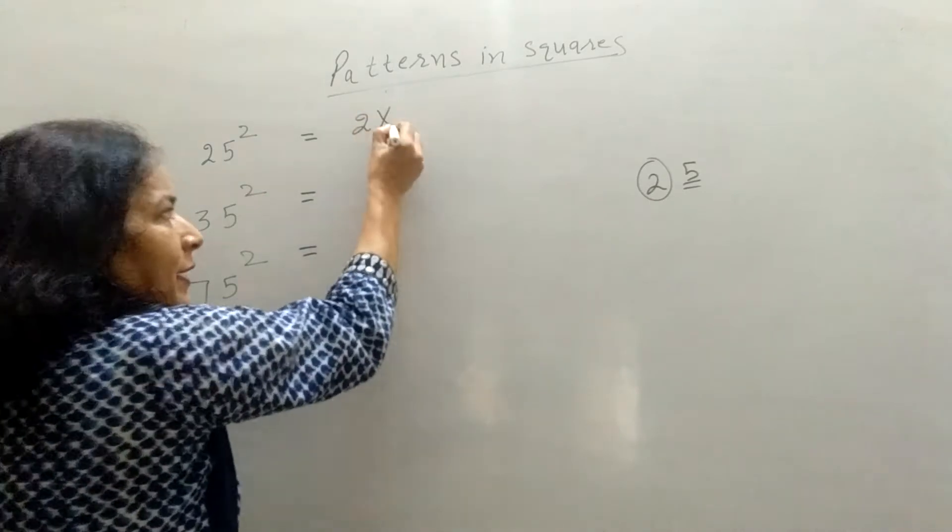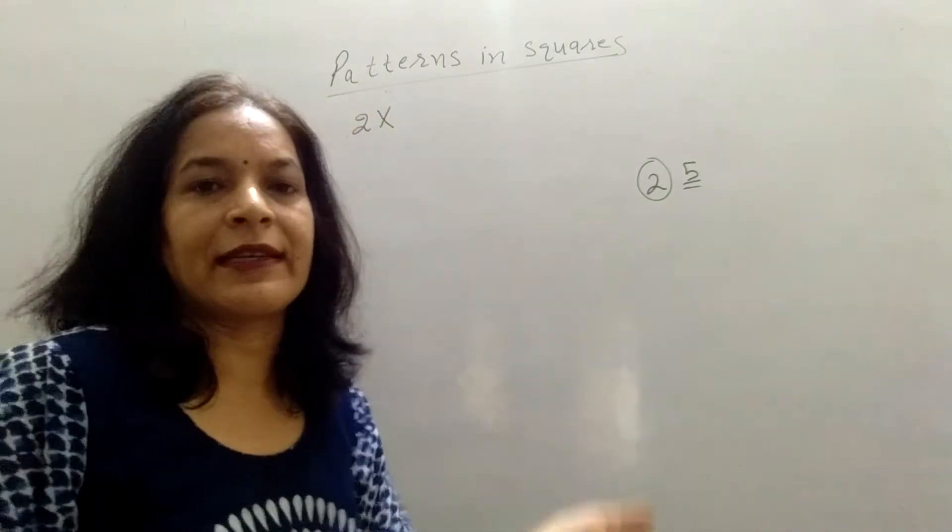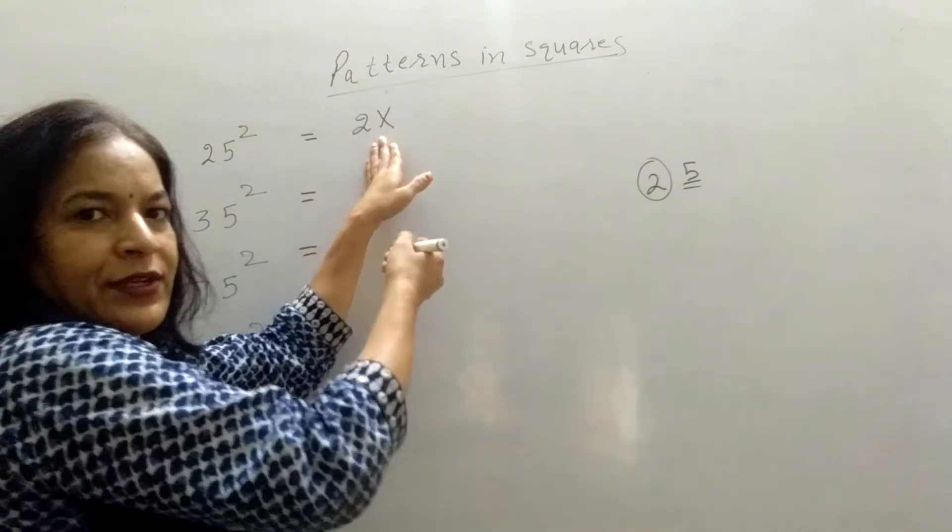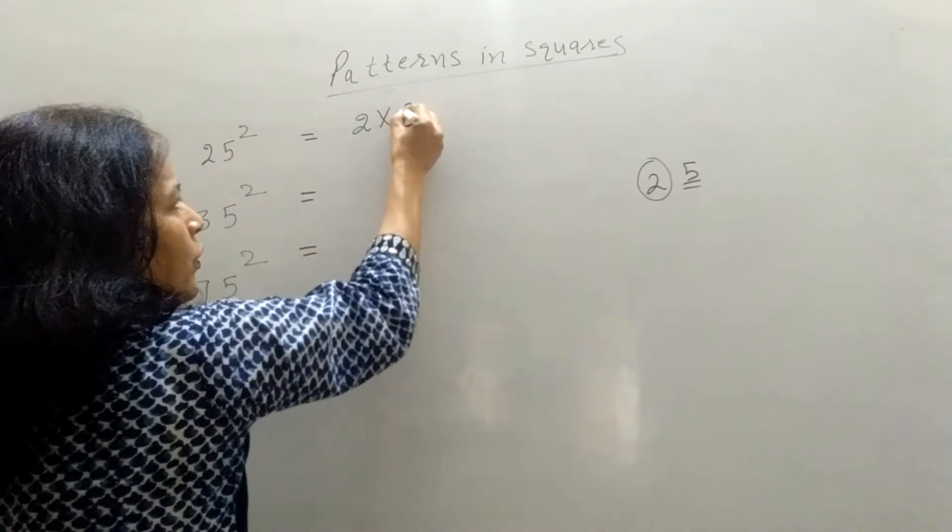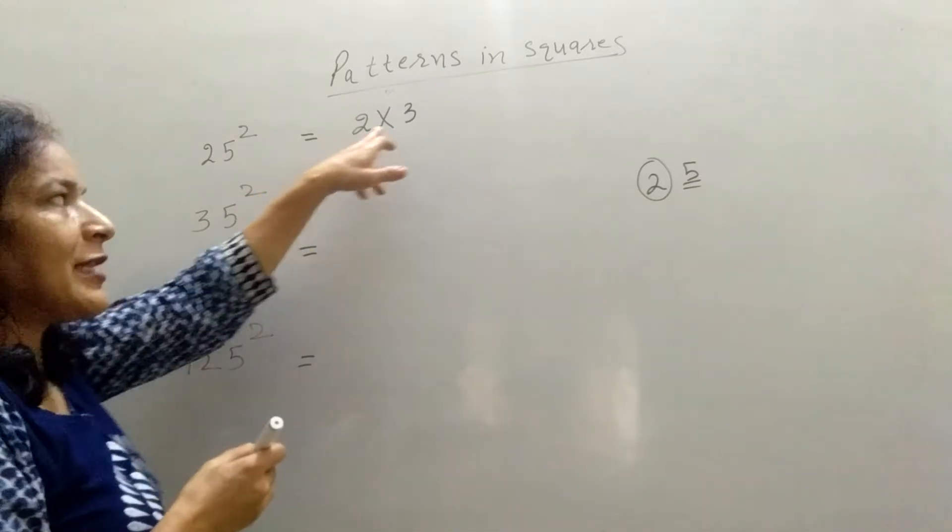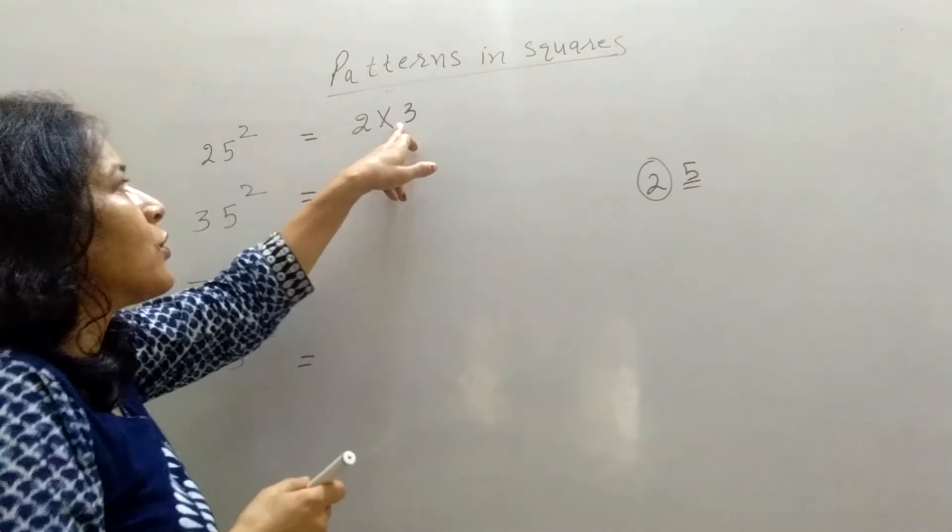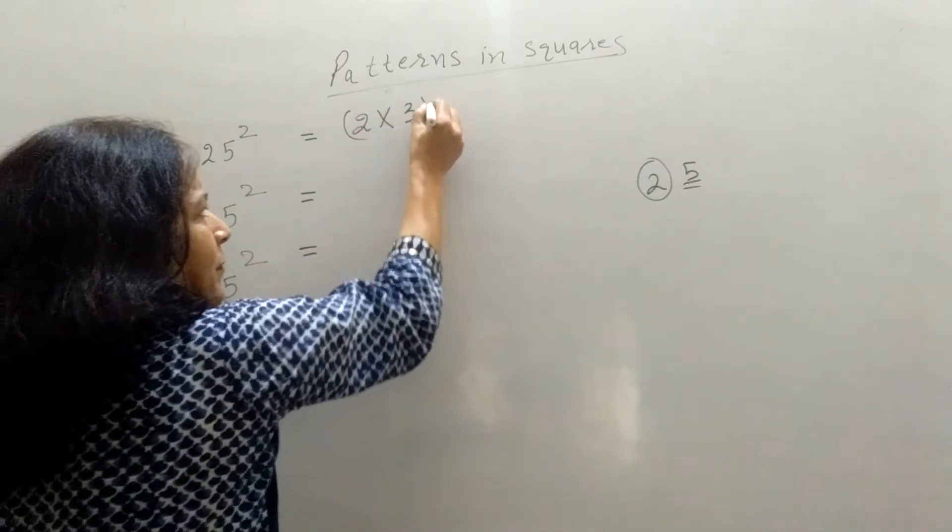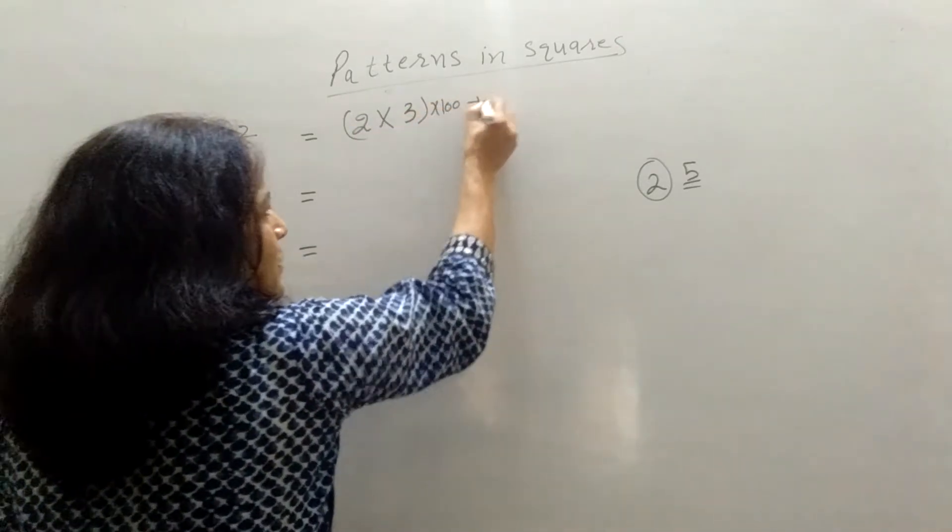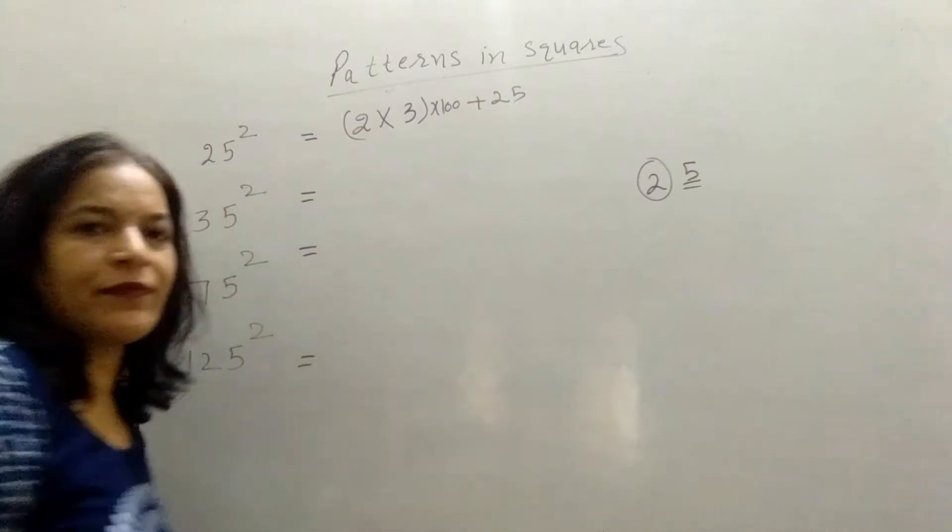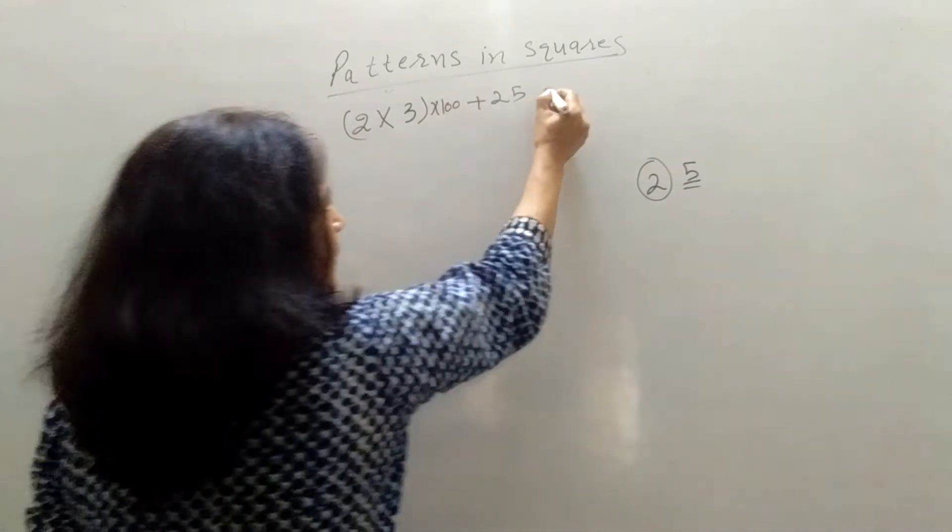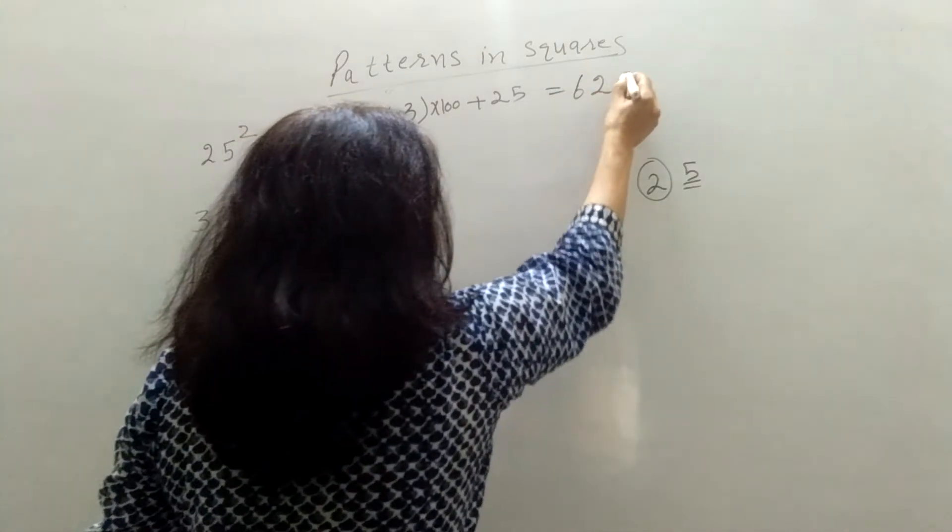2 multiplied by its successor. Means what? The consecutive number greater than it. So 3. 2 into 3. Successor of 2 is 3. So 2 into 3. Then multiply it by 100 plus 25. So what will you get? 2, 3. Just 600 plus 25. 625.